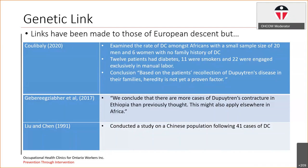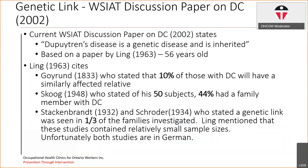With respect to links of European descent, other studies have been done on other populations that have also found increased risks. Two of those looked at African populations and another actually looked at a Chinese population. So to say that it's exclusively in those of European descent is actually false. The current WSIAT discussion paper from 2002 states that Dupuytren's disease is a genetic disease and it's inherited.